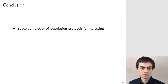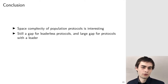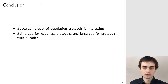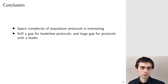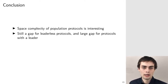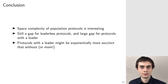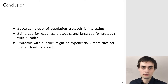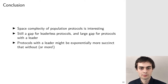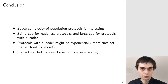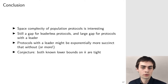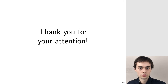To conclude: space complexity is indeed interesting. For leaderless protocols there is still a gap — an exponential lower bound and a triply exponential upper bound. There is an even larger gap for protocols with a leader: a doubly exponential lower bound and an Ackermannian upper bound, so there is still work to do. It is possible that protocols with a leader are exponentially more succinct than protocols without one. We conjecture that both known lower bounds are already tight: the exponential bound for the leaderless case and the doubly exponential bound for the case with leaders. Thank you for your attention.